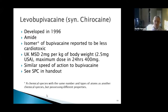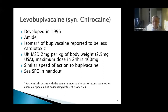Levobupivacaine was developed in 1996 - a very recent drug. It is an amide and an isomer of bupivacaine, having the same number and types of atoms but slightly different properties. It is reported to be less cardiotoxic, which could be a reason to consider its use. UK maximum safe dosage is 2mg per kg body weight, or 2.5mg in the USA, with a maximum of 400mg in 24 hours.